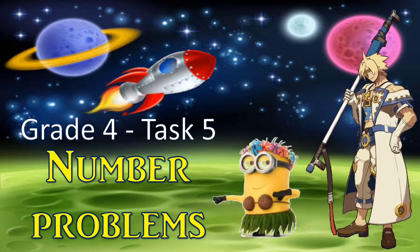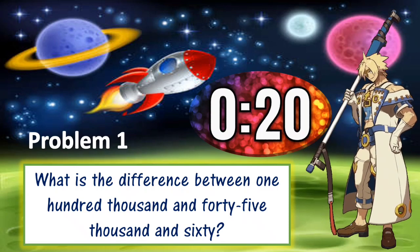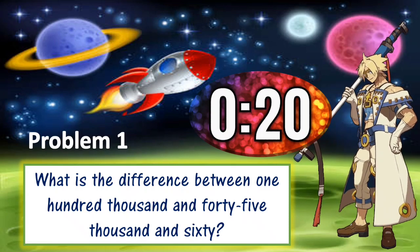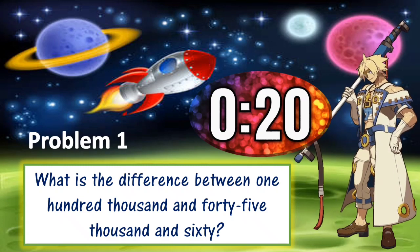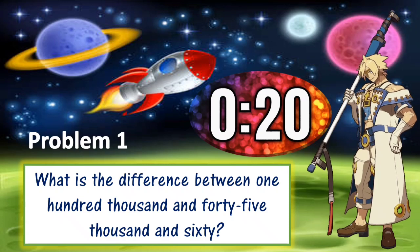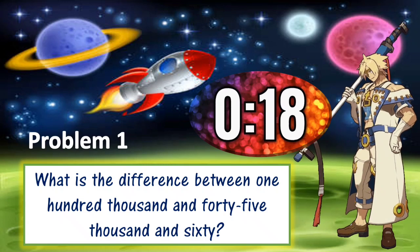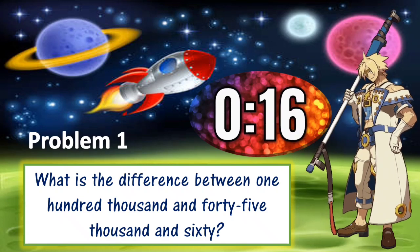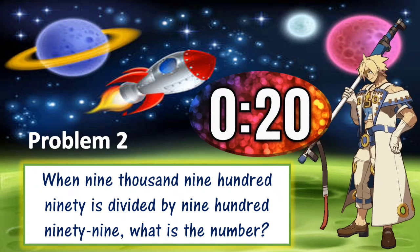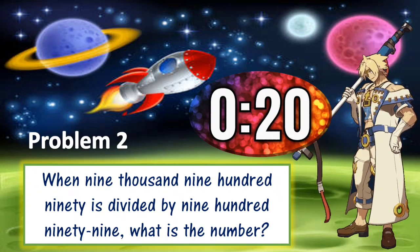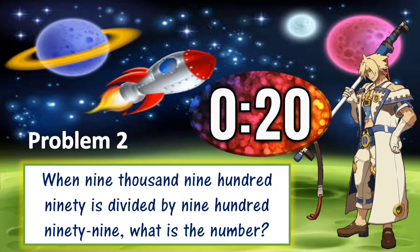Task 5. Number problems. Problem 1: What is the difference between 100,000 and 45,060? Problem 2: When 9,990 is divided by 999, what is the number?